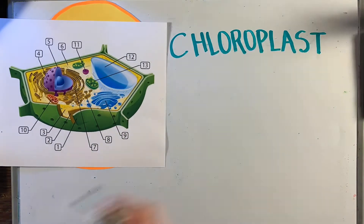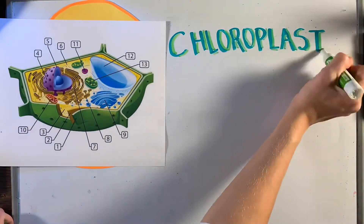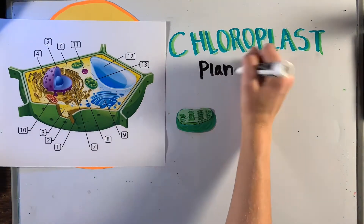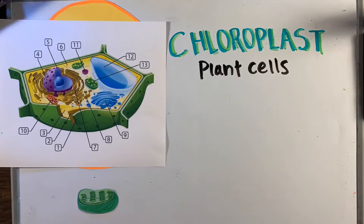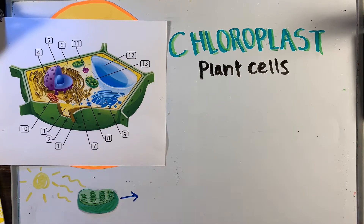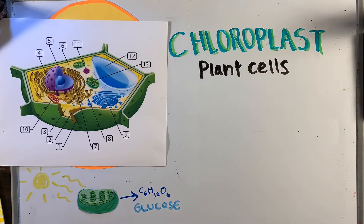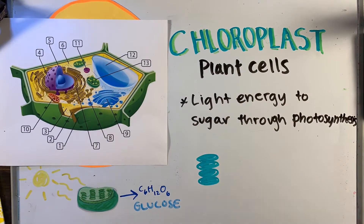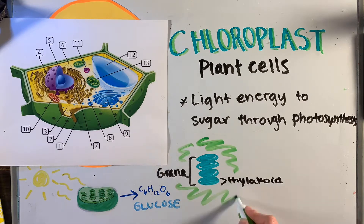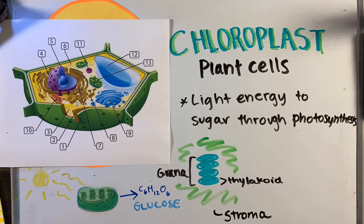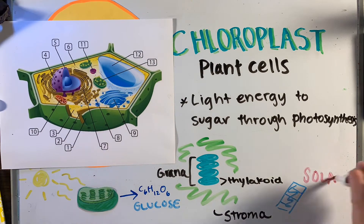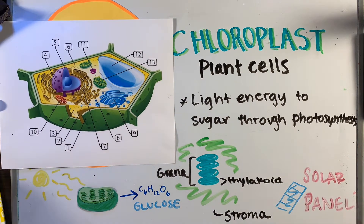While we're looking at a plant cell, let's take a look at the chloroplast. Chloroplasts are only found in plant cells, and their function is to convert light energy into a sugar called glucose through a process called photosynthesis. The chloroplast consists of a double membrane, thylakoids and stacks called grana, a fluid called stroma, and a pigment called chlorophyll. The chloroplast would be like a solar panel, turning solar energy into a usable form of energy for a plant.